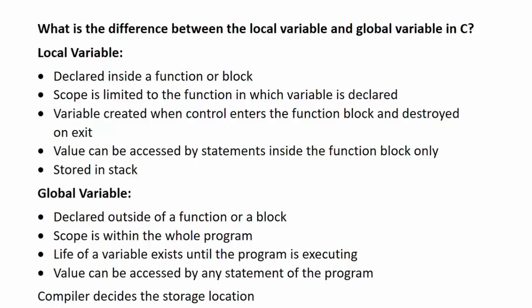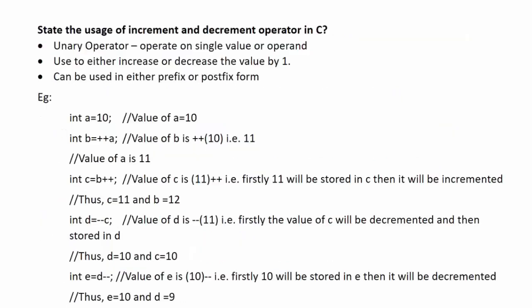Next question: what is the difference between a local variable and a global variable in C? Local variables are declared inside a function or a block. Their scope is limited to the function in which the variable is declared. The variable is created when control enters the function block and destroyed on exit. Values can only be accessed by statements inside the function block.